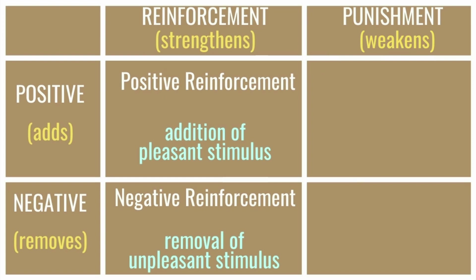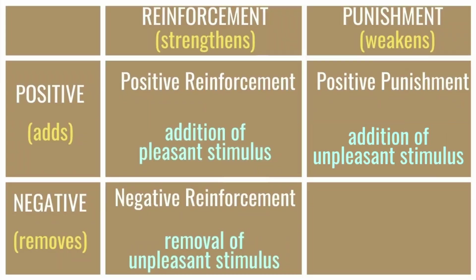The second part of operant conditioning is punishment — the exact opposite of reinforcement. While reinforcement strengthens behaviour, punishment weakens or reduces the likelihood of a behaviour happening again. Punishment is also of two types: positive and negative. Positive punishment weakens the likelihood of a behaviour by adding something unpleasant. For example, when we were kids we were told not to touch a hot stove, but we did anyway and got a burning sensation or a boil. The behaviour we don't want repeated is touching the stove, and the addition of the unpleasant stimulus — the burning sensation — is the positive punishment.